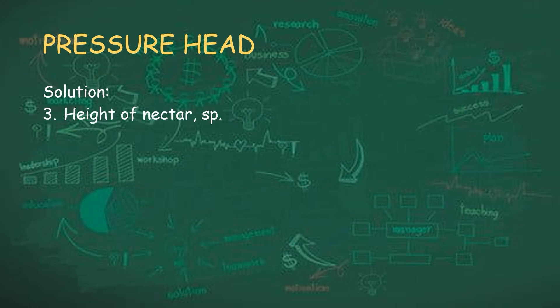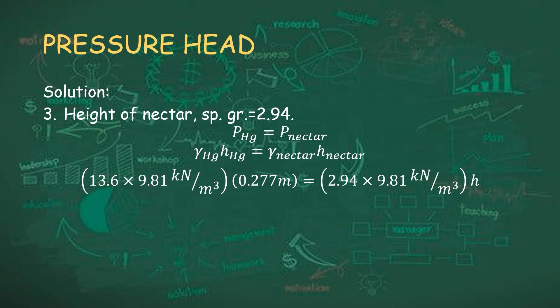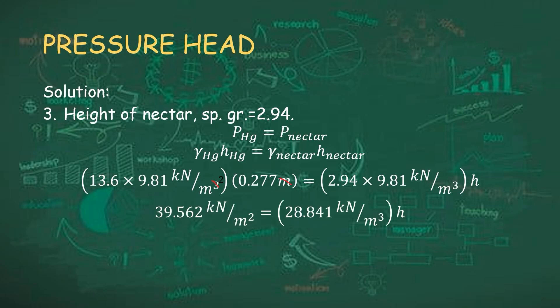Lastly, we are going to solve for the height of nectar having a specific gravity of 2.94. Using the same equation: 13.6 times 9.81 kN/m³ times 0.277 m equals 2.94 times 9.81 kN/m³ times the head. The pressure of mercury equals 36.956 kN/m² equals 28.841 kN/m³ times head. Simplifying and cancelling out units, the height of nectar equals 1.372 meters.